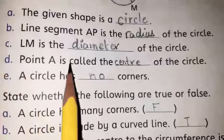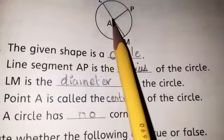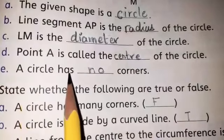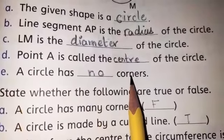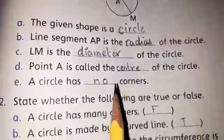D: Point A is called the center of the circle. Yes, this point is the center of the circle. E: A circle has dash corners. How many corners circle has? Excellent, no corner.